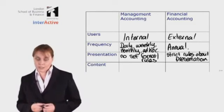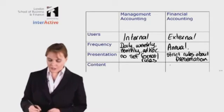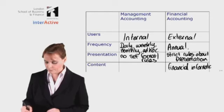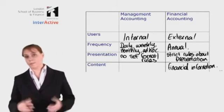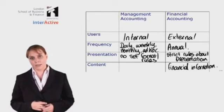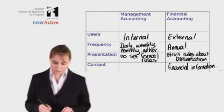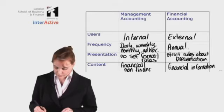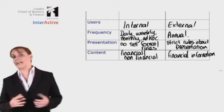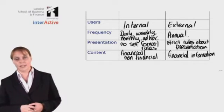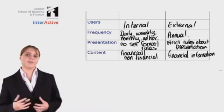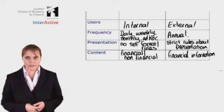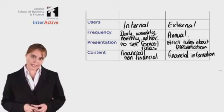Finally, looking at the content of management and financial accounting: financial accounting will be primarily financial information — so the sales figure for the year, expenses for the year, net profit for the year, and so on. Whereas management accounting information is going to be both financial and non-financial. For example, the budget for the coming year is financial information, while customer satisfaction surveys or employee surveys would be non-financial information.